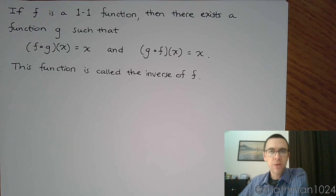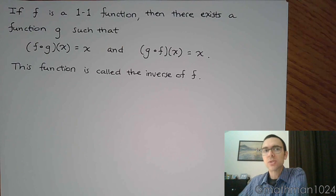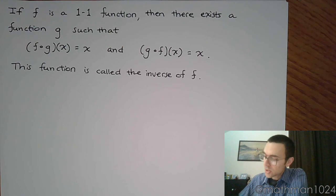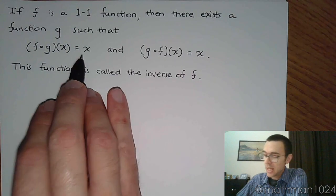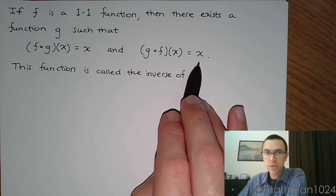If f is a one-to-one function, then there exists a function g such that f composed with g of x equals x, and g composed with f of x equals x.